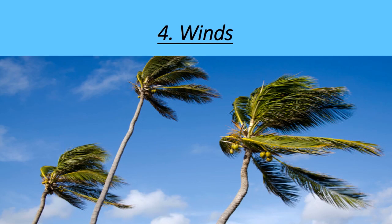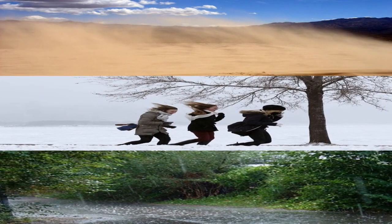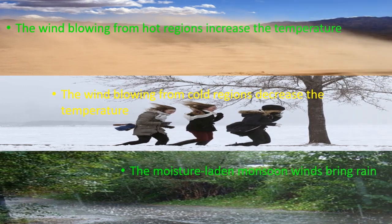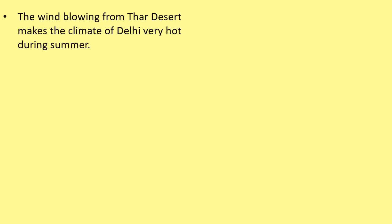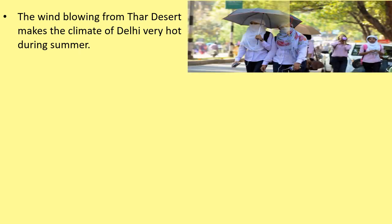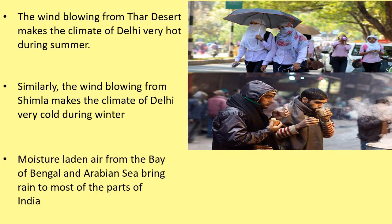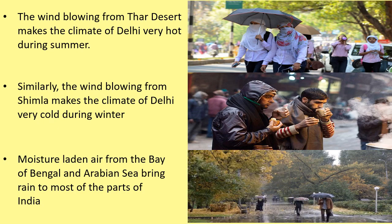Winds. Winds blowing from hot regions increase the temperature, while winds blowing from cold regions decrease the temperature. The moisture-laden monsoon winds bring rain. The wind blowing from the Thar Desert makes the climate of Delhi very hot during summer. Similarly, the wind blowing from Shimla makes the climate of Delhi very cold during winter. Moist-laden air from the Bay of Bengal and Arabian Sea brings rain to most parts of India.